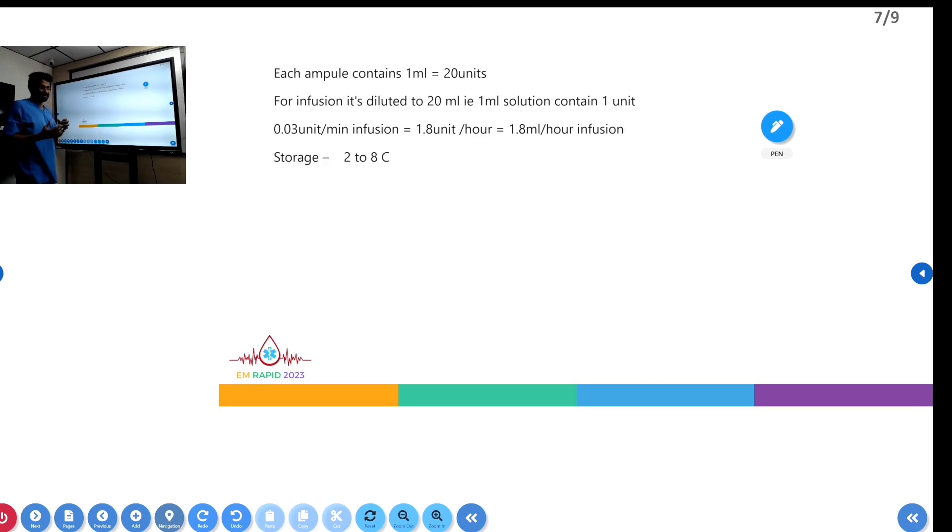Each ampule contains 1ml, which contains 20 units of vasopressin. For dilution, 1ml is diluted in 19ml of normal saline for a total of 20ml, so each 1ml contains 1 unit of vasopressin.